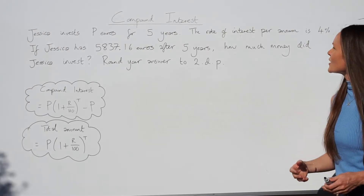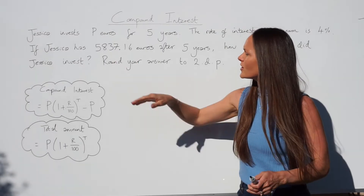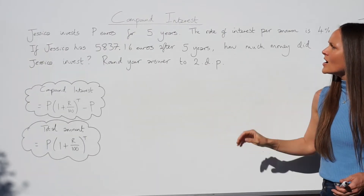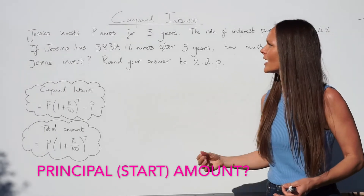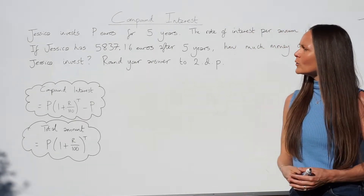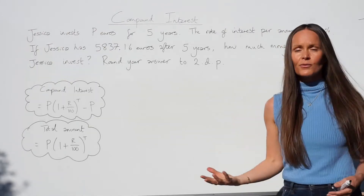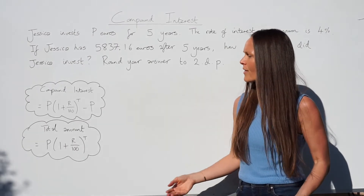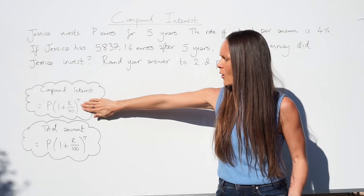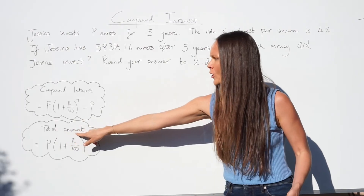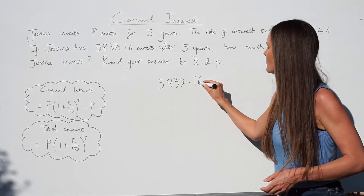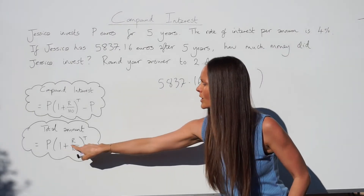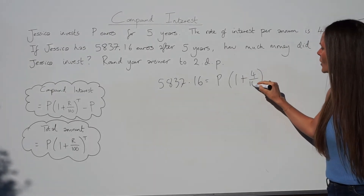In the next question, Jessica invests P euros for five years at four percent per annum compound interest. After five years she has €5,837.16. How much did Jessica invest? Round your answer to two decimal places. We're finding the principal amount P. Since we know the total amount after five years, I'll use the version of the formula for total amount — without subtracting the principal at the end.